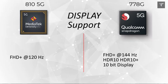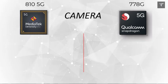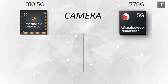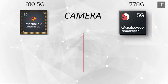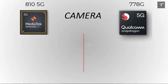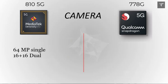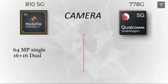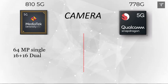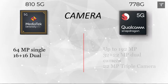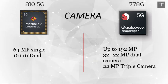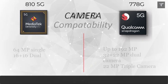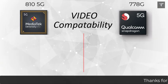Talking about camera performance and maximum camera resolution, the MediaTek Dimensity 810 supports a maximum of 64MP for a single camera and 16MP for dual cameras. The Snapdragon again has the upper edge with a single camera of 192MP and a dual camera setup of 32MP plus 22MP.